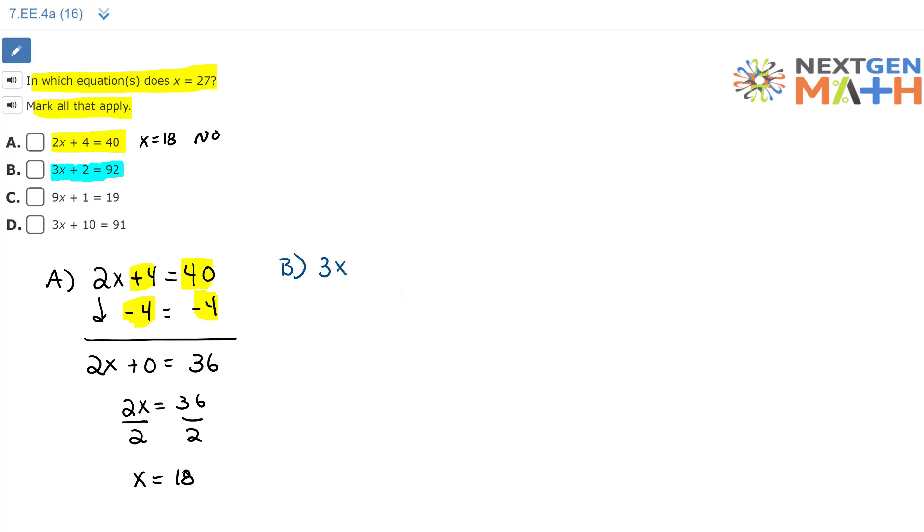B is 3x plus 2 equals 92. Again, we're going to subtract 2 from each side because our goal is to get x by itself. 3x plus 2 minus 2, that way we would have plus 0. Now 92 minus 2, that's equal to 90. We can write this as 3x equals 90. Divide each side by 3. x equals 30.